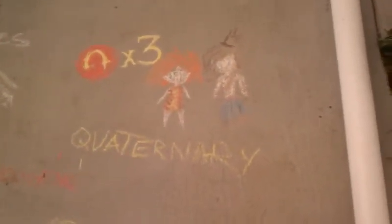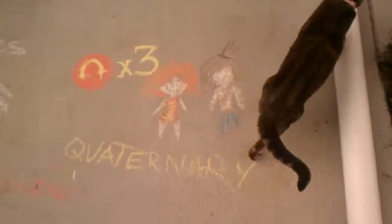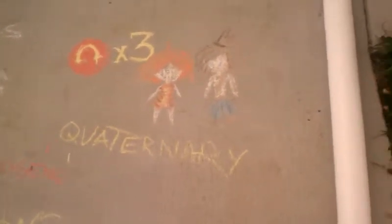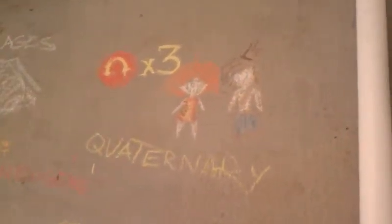The Quaternary period is most famously marked by the evolution of humans, starting with Homo erectus. Everyone knows of the fossil called Lucy — it's mostly incomplete, but it gives us solid evidence of when humans started to evolve. From Homo erectus, we eventually evolved into the Neanderthals, the Cro-Magnons, and eventually Homo sapiens. To represent that, I just drew Eep and Guy from the DreamWorks movie The Croods.